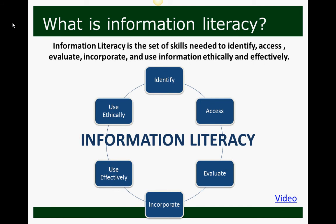Information literacy can be thought of as a cycle. At the beginning of the cycle you must identify that there is a need for information. Once that identification is made you can then determine how and where to access the information. You can then evaluate the information — if it's what you need and if it's credible — incorporate it into your existing knowledge, and then begin to use it both ethically and effectively.